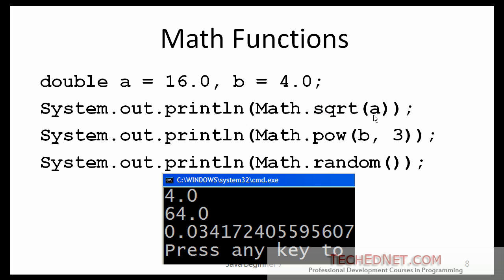Here is the square root function — square root of a, where a is 16, will give you 4. The second one, b raised to the third power (b cubed), will be 64. The third function is random, which generates a random number between 0 and 1. If you run the same example, most likely the outcome will be a different random number. If I call the same function again, I will get yet another random number. That is the purpose of this function.